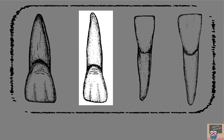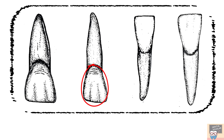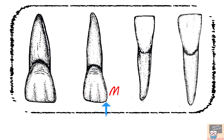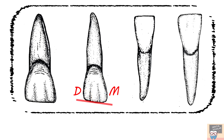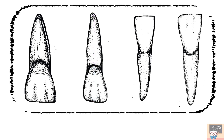Now look at the other maxillary incisor. The crown form almost resembles that of the maxillary central incisor with a few differences. First, the cervico-incisal crown length is much greater than the mesiodistal dimension of the crown. The mesio-incisal and the disto-incisal angles are rounder as compared to the central incisor. The disto-incisal angle is much more rounded compared to the mesio-incisal angle. The incisal outline slopes gingivally from mesial to distal, and the crown length when compared to root length appears much less as compared to the central incisor. So these features indicate that the tooth is a maxillary lateral incisor.